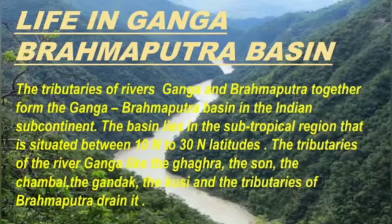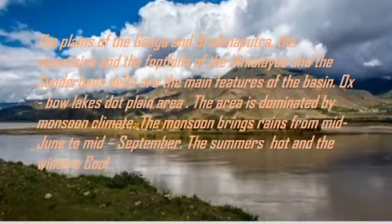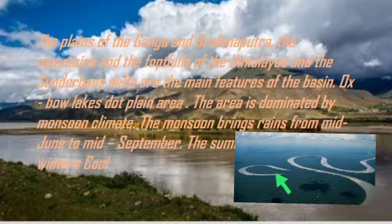Life in the Ganga-Brahmaputra Basin. The tributaries of Ganga and Brahmaputra together form the Ganga-Brahmaputra Basin in the Indian subcontinent. The basin lies in the subtropical region, situated between 10 degrees north to 30 degrees north latitudes. The tributaries of the river Ganga, like the Ghagra, the Son, the Chambal, the Gandak, the Koshi, and the tributaries of Brahmaputra drain it. The plains, the mountains and foothills of the Himalayas, and the Sundarbans Delta are the main features of the basin. Oxbow lakes are found toward the plain area.